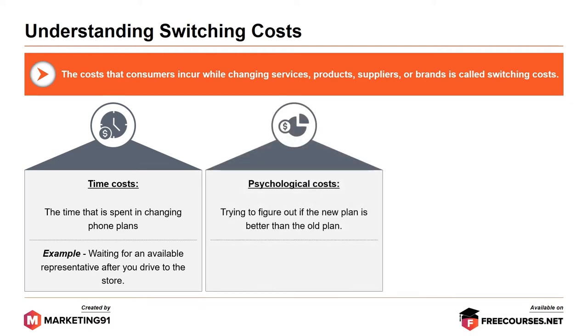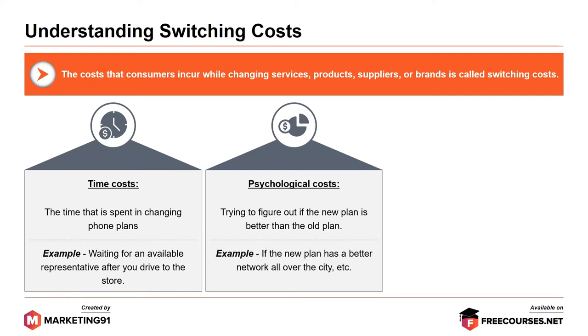Psychological cost: trying to figure out if the new plan is better than the old one. For example, if the new plan has a better network all over the city. Effort-based cost: if a lot of effort needs to be put into changing phone plans. For example, if there is a lot of paperwork involved.